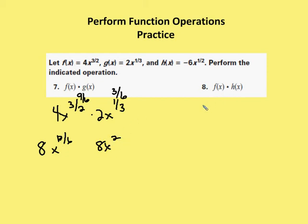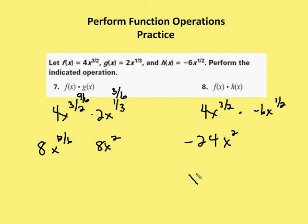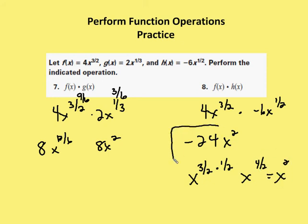Now f of x times h of x. I have 4x to the 3 halves times h of x, which is negative 6x to the 1 half. I multiply the coefficients separately — I have negative 24. Again, I'm going to add the exponents together because I have the same base with different exponents. 1 half plus 3 halves gives me 4 halves. 4 halves is the same as 2, so x squared. So x to the 3 halves times x to the 1 half gives me x to the 3 halves plus 1 half as an exponent, which gives me x to the 4 halves, which is equal to x squared. So my result is negative 24x squared.